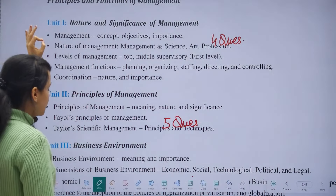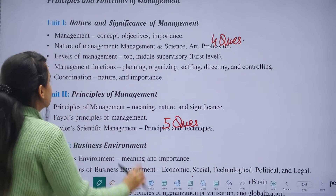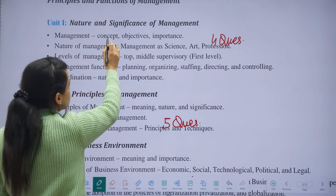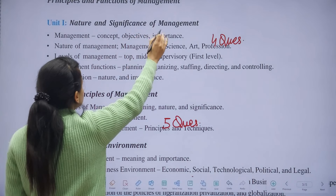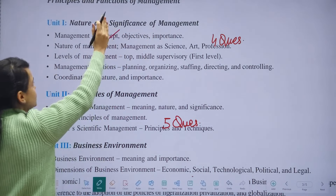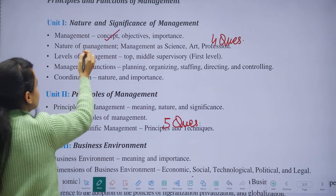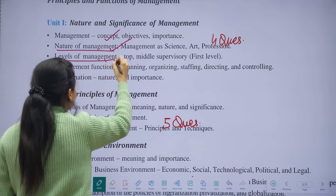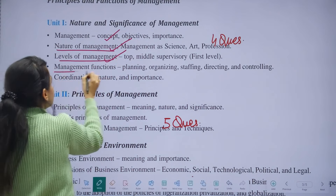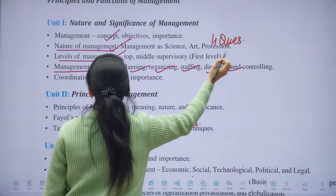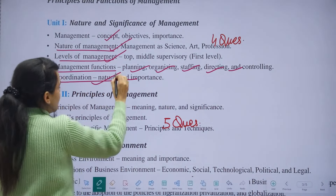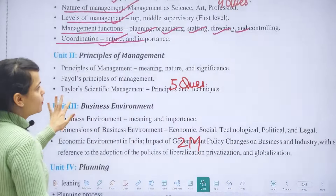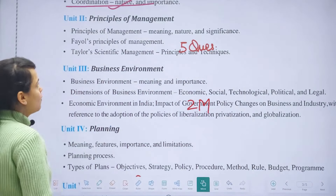The first chapter is Nature and Significance of Management. It covers: the concept of management, objectives, and importance — all of which you learn in CBSE. You also learn the nature of management, the levels of management, the functions of management, and the coordination of management. So there is nothing new here; everything you have covered for your board exams.